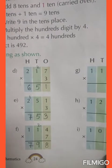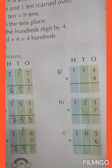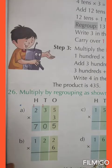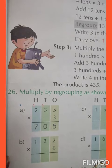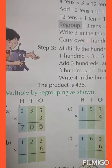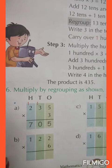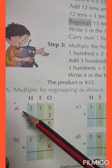Same way you will have to do question number G, H, and I. Next is question number 26: multiply by regrouping as shown. This also you have to multiply by regrouping, that means by carrying over. Now look at question number A.